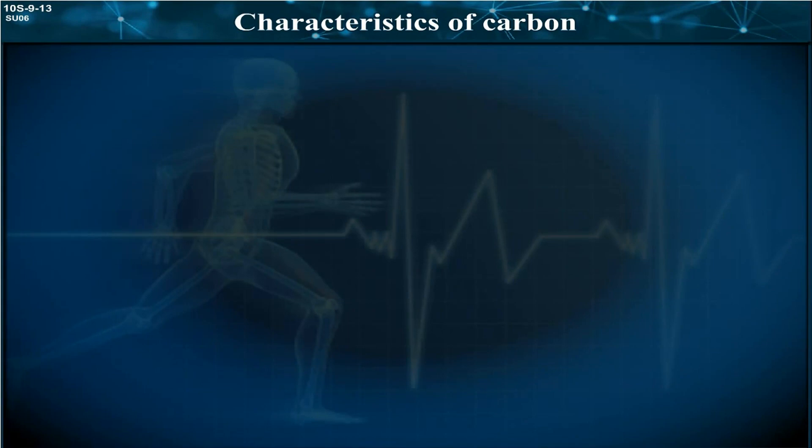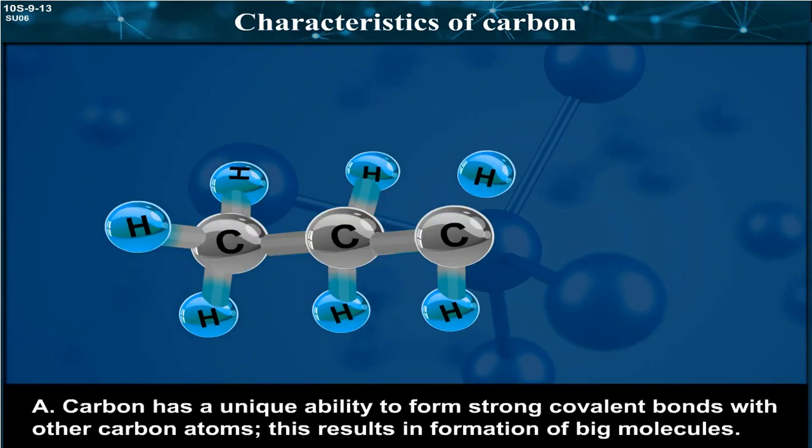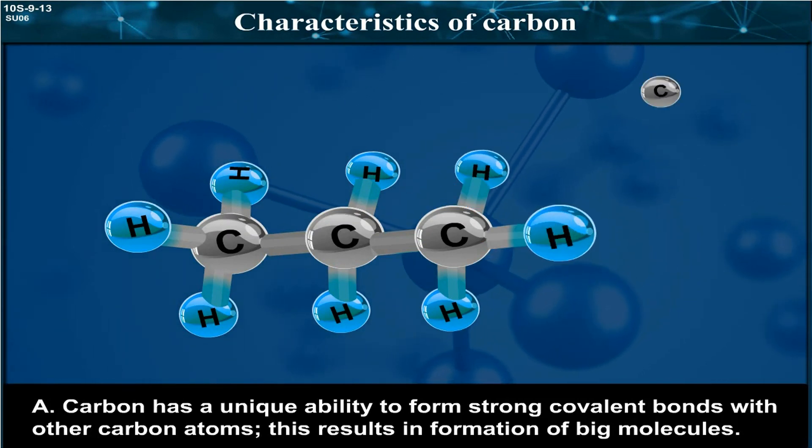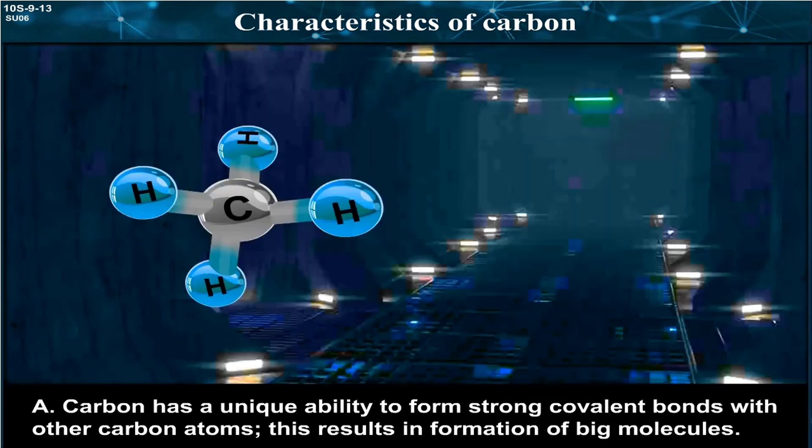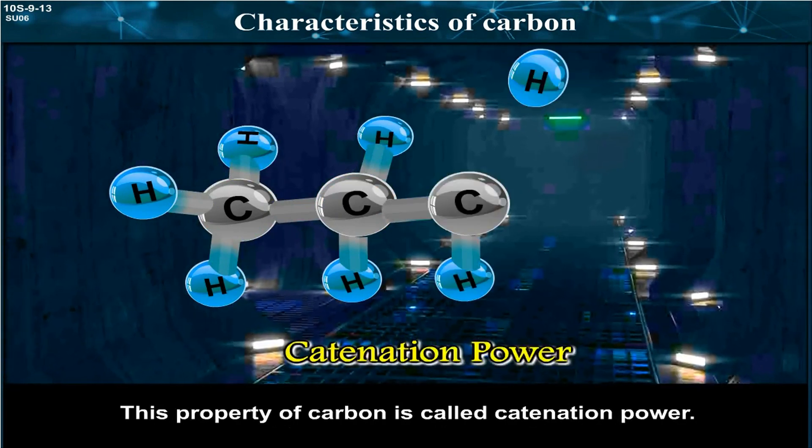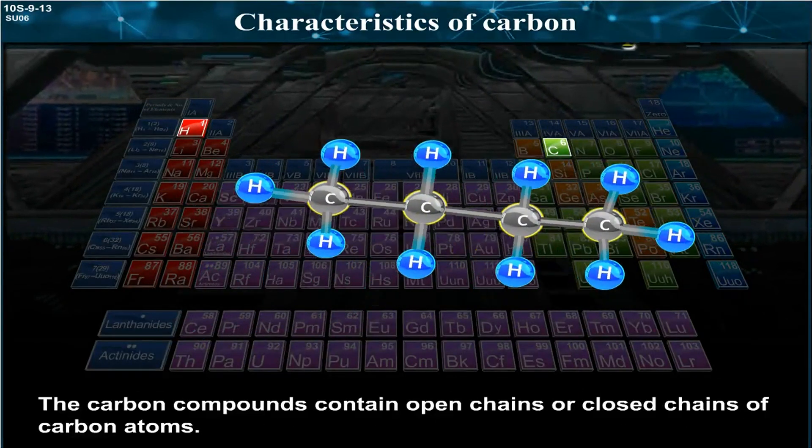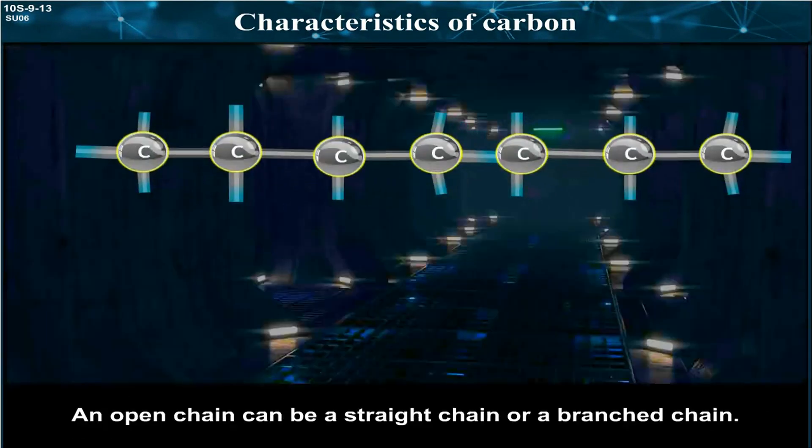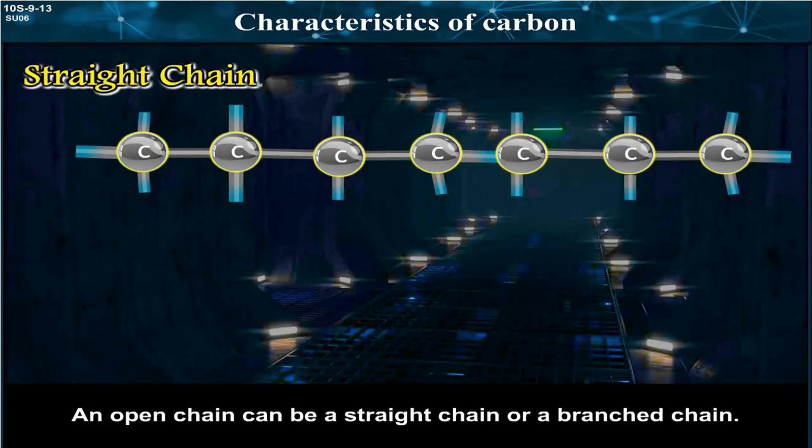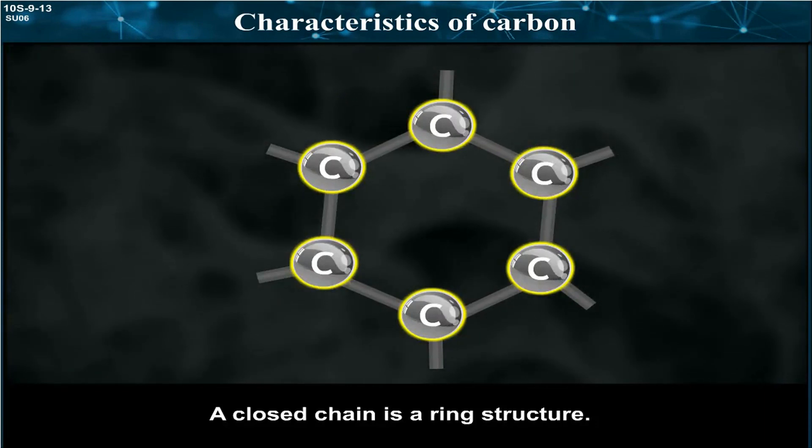Characteristics of Carbon: Carbon has a unique ability to form strong covalent bonds with other carbon atoms. This results in formation of big molecules. This property of carbon is called catenation power. The carbon compounds contain open chains or closed chains of carbon atoms. An open chain can be a straight chain or a branched chain. A closed chain is a ring structure.